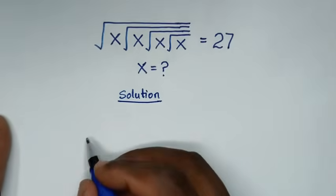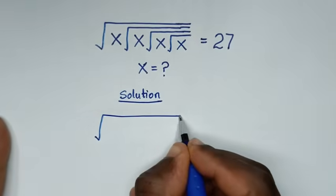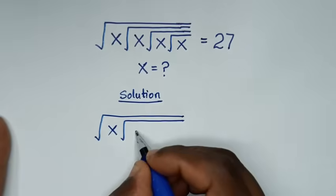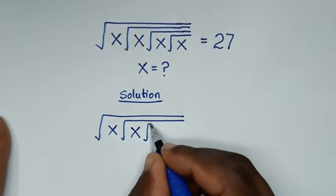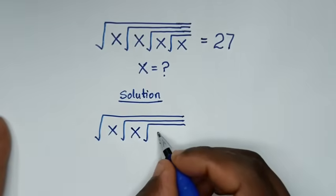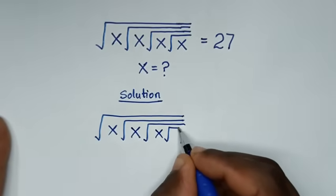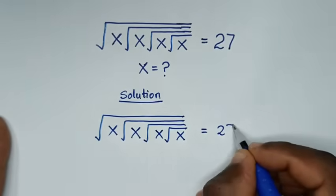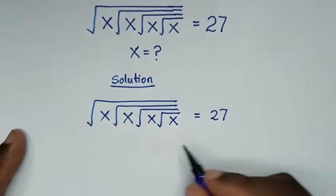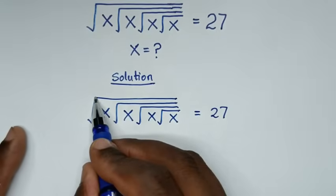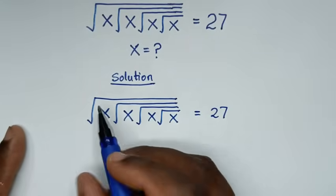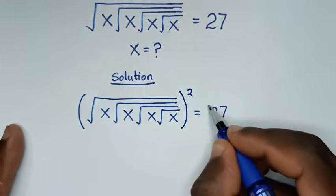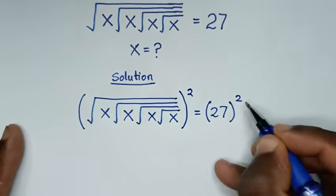From our problem, which is square root of x under square root of x under square root of x, is equal to 27. In the first step, we'll remove this square root here, so we'll apply square on both sides — bracket square on both sides.